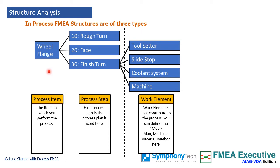Process items are the parts, components, or products which are being processed. In the example shown here, we are doing process FMEA on machining a wheel flange. Process steps are the various sequential process steps that the process runs through. You can see all the process steps connected in the structure diagram. Process work elements for each step are the machines, work holding elements, and toolings that enable the process to be performed.